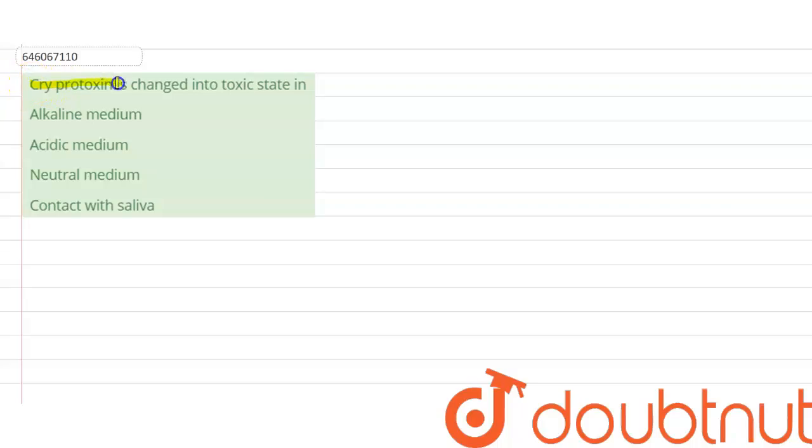Cry protoxin is changed into toxic substance in: option 1, alkaline medium; option 2, acidic medium; option 3, neutral medium; option 4, contact with saliva. So what is cry protoxin?